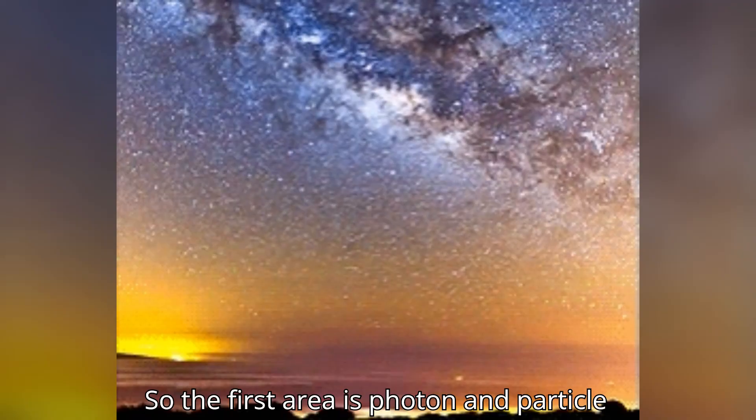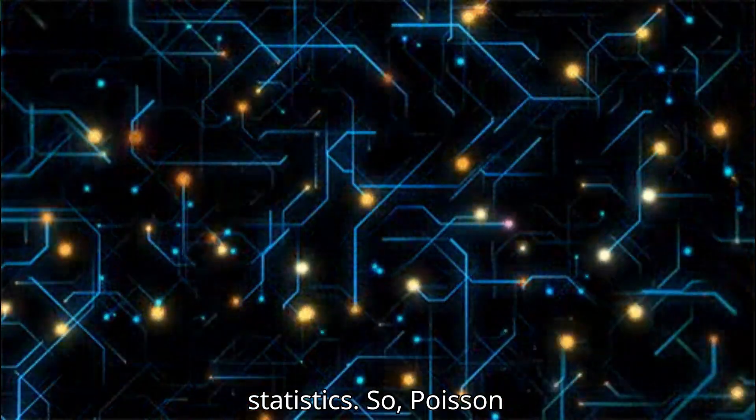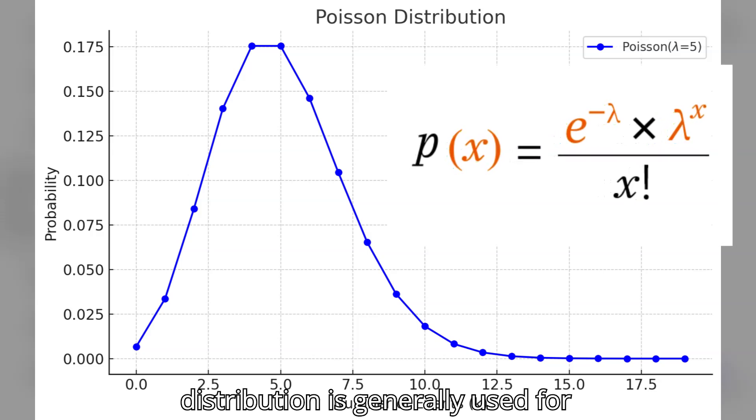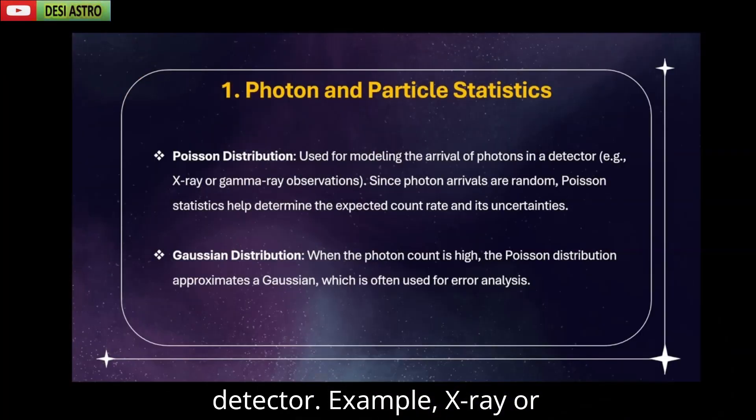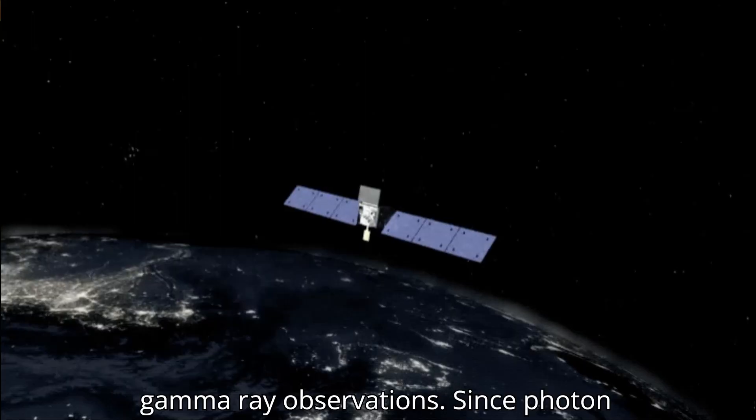The first area is photon and particle statistics. Poisson distribution is generally used for modeling the arrival of photons in a detector. For example, X-ray or gamma-ray observations.